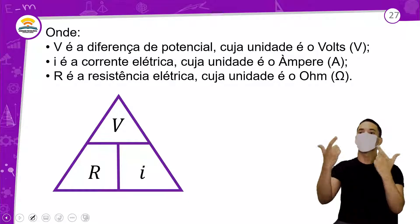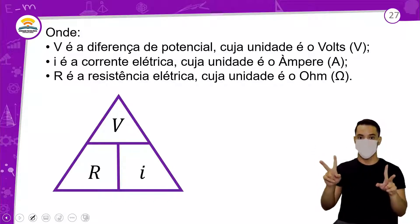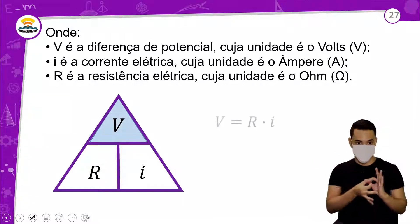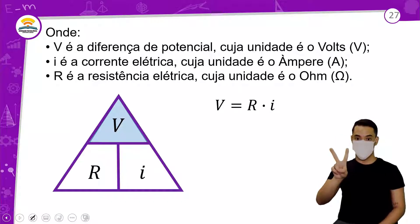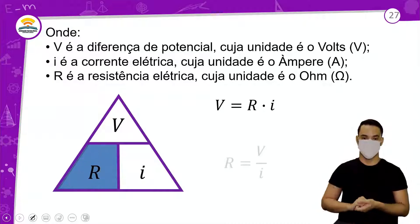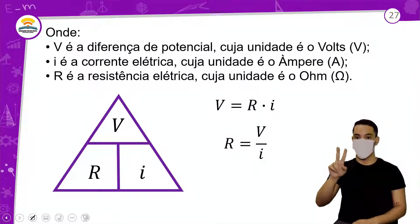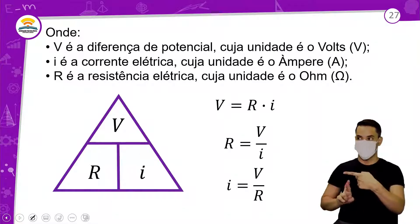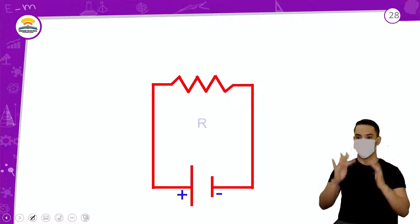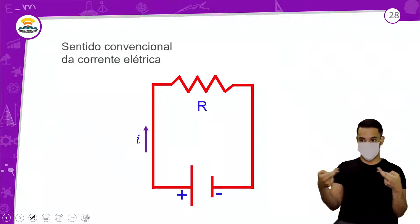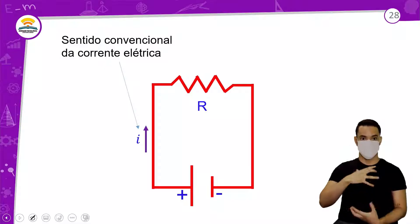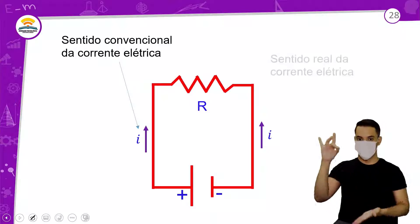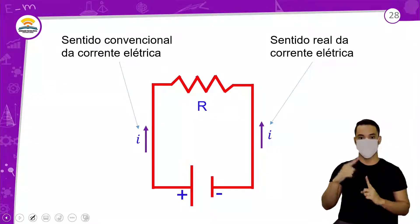V é a diferença de potencial em volts, I é a corrente elétrica em amperes e R é a resistência em ohms. Se você quer V, multiplica R vezes I. Se quer R, divide V por I. Se quer I, divide V por R. Em um circuito simples, o sentido convencional da corrente elétrica é do positivo para o negativo. O real é os elétrons que se movem, do negativo para o positivo.